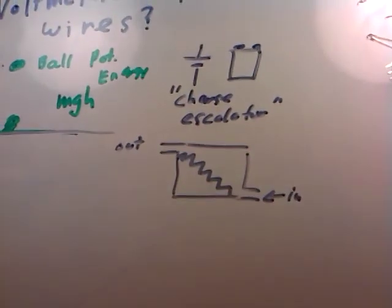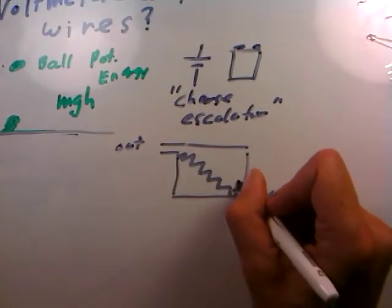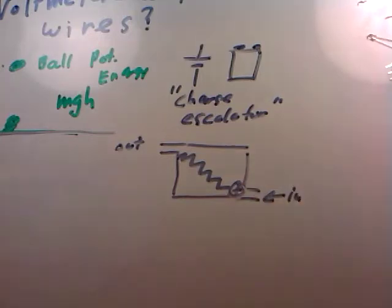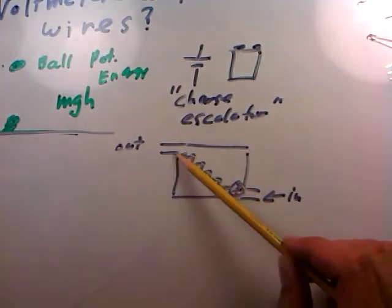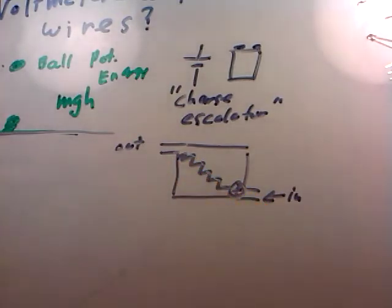So if you were a charge here in a circuit, you could get on the escalator. Say there's a positive charge getting on the escalator, and the positive charge would start rising, climbing the escalator. The escalator is going to pull it up at the expense of the chemical potential energy in the battery. The battery will go dead at some point. But in either case, the charge will get lifted and it will go out here and can feed the circuit.